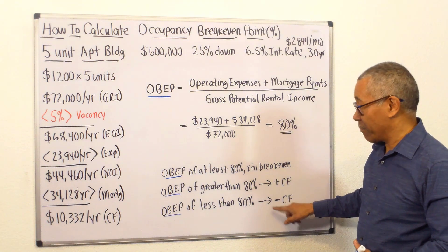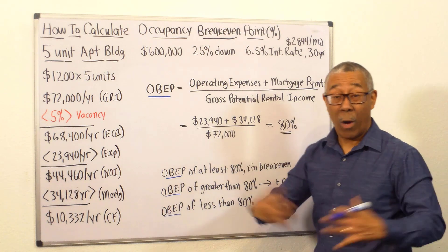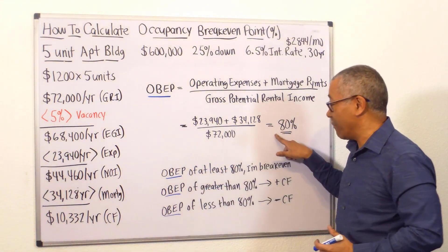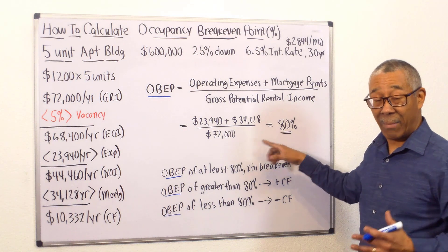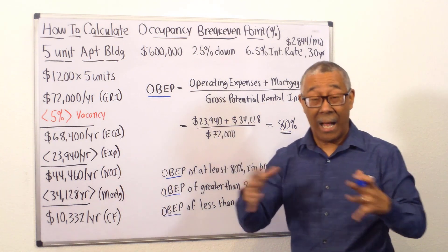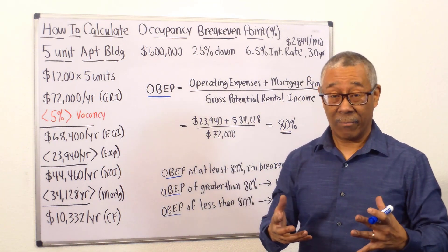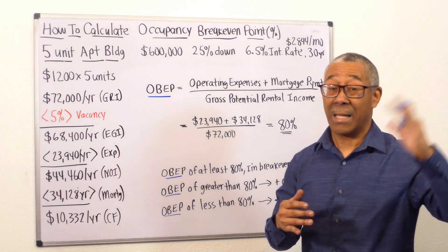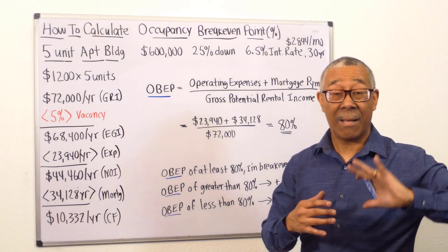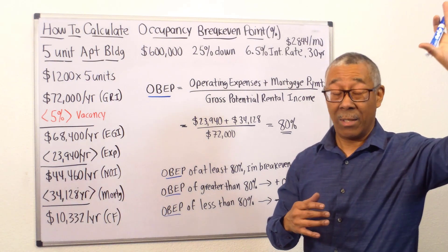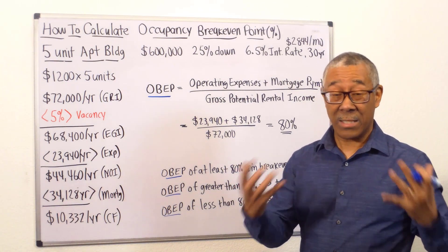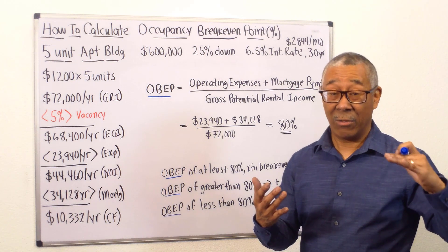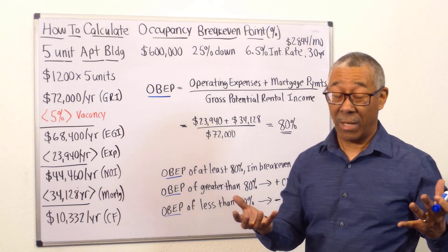So if this were a 100-unit property and my break-even point is 80%, that means I have to have at least 80 units occupied to break even. Once the 81st person moves in, that's all cash flow — anything above that is pure cash flow. If I have that same 100-unit property and I'm at 79 units occupied, that means I'm still negative cash flow.